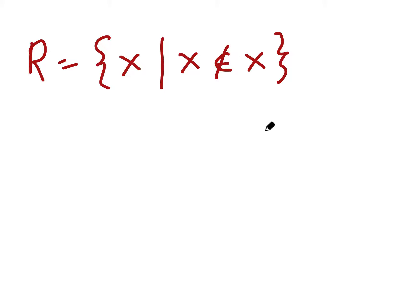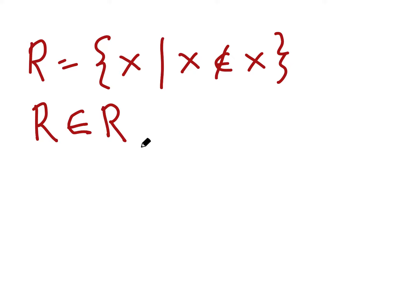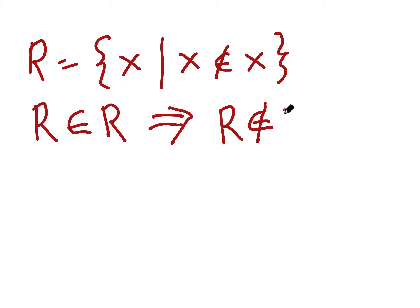Or you could say sets could contain themselves. So one way or another, this definition seems to make some sense. Let's ask the obvious question: does the Russell set contain itself? Let's assume R is a member of R. If R is a member of R, it's a member of this set, and this implies that R is not a member of R.